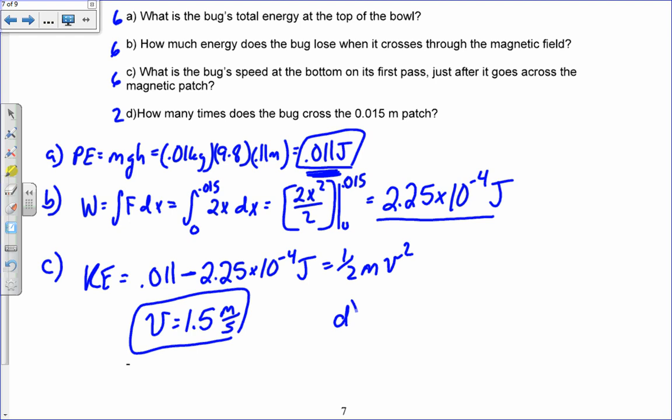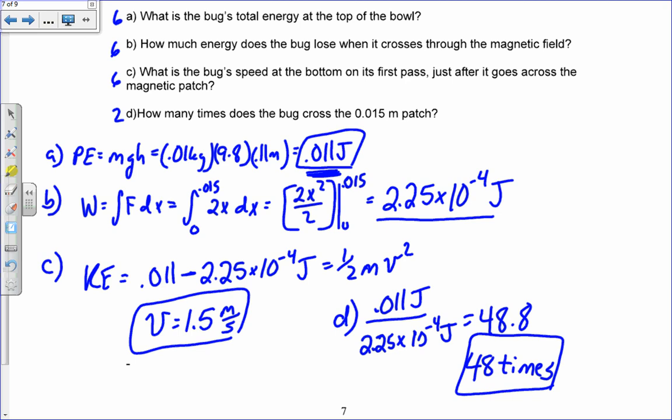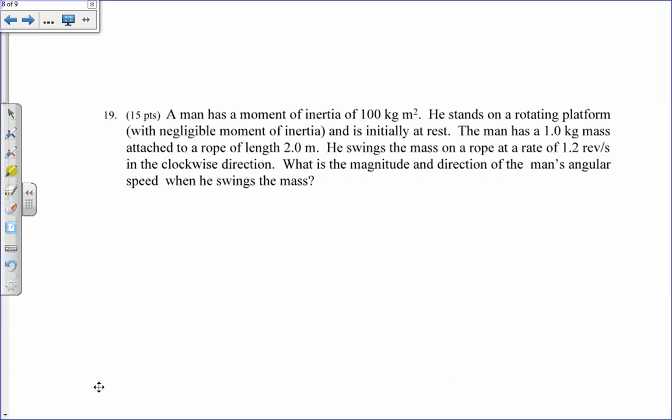And then finally in part D, I want to know how long does it take to lose that energy? I just take the total energy, 0.011 joules, divided by the amount that he loses each time. And that gives me 48.8. So he goes through 48 times. And on that 49th time, he stops on the patch. Number 19, y'all did pretty well on that one.